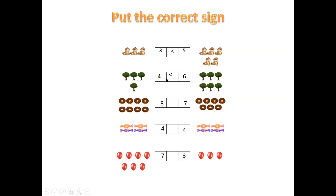4 less than 6. Now count here: 1, 2, 3, 4, 5, 6, 7, 8. And here: 1, 2, 3, 4, 5, 6, 7. This is 8, this is 7. Which is more? 8 is more. So, 8 greater than 7.